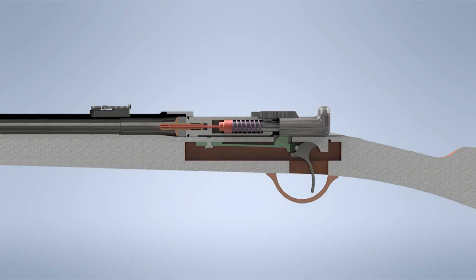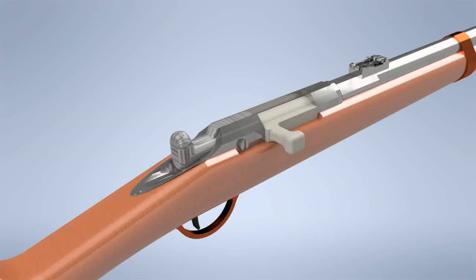To fire, you first pull back the priming piece, placing the firing needle under spring tension. The sear locks it to the rear.